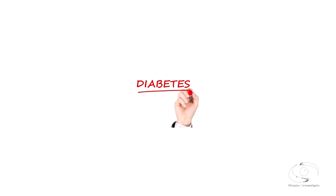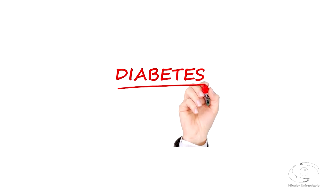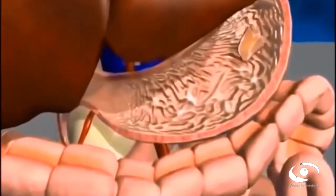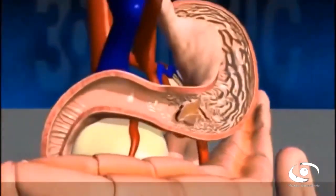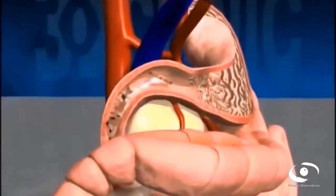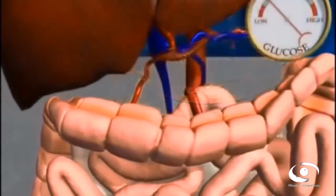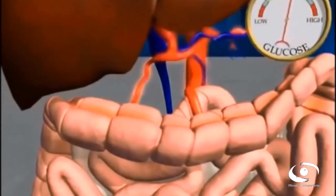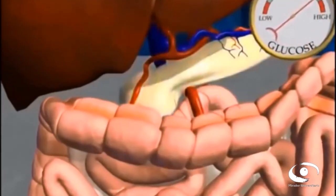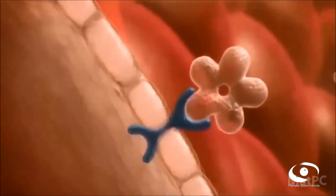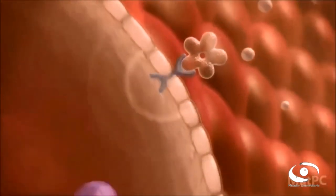La diabetes es una enfermedad crónico-degenerativa que se presenta cuando el páncreas no produce insulina o lo hace de forma deficiente, y cuando los órganos encargados de regular los niveles de glucosa en circulación —músculo, hígado y tejido adiposo— no utilizan adecuadamente la insulina. La insulina es una hormona que tiene la función de regular los niveles de glucosa en la sangre.